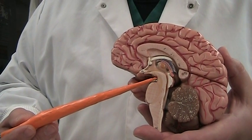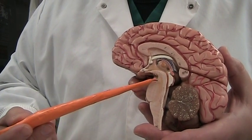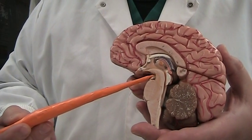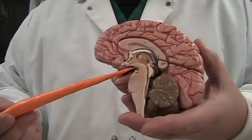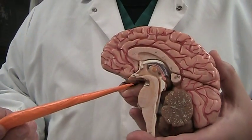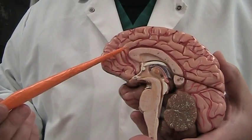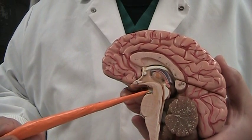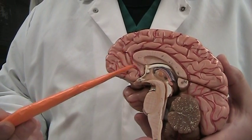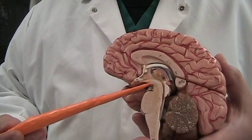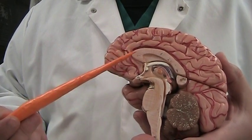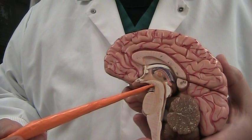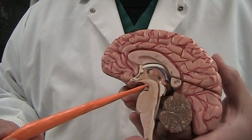Mesencephalon is this region right about here. In the anterior lateral area, this would be where we have the cerebral peduncle, connecting the cerebrum to the diencephalon region. It's kind of a continuation all the way through. Mesencephalon.